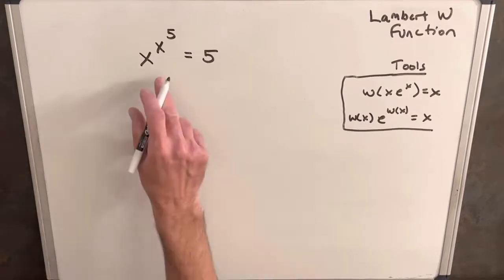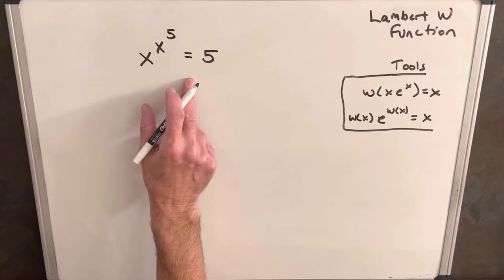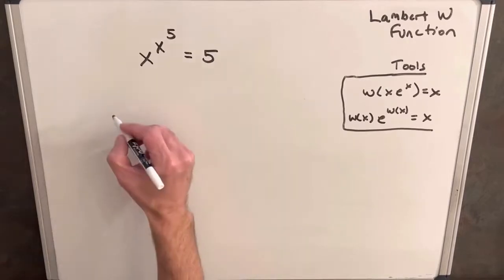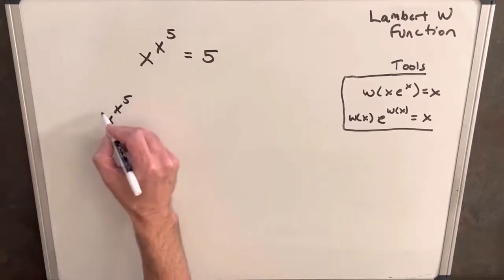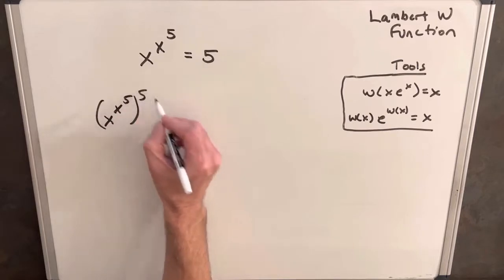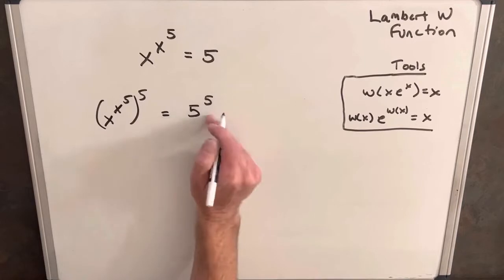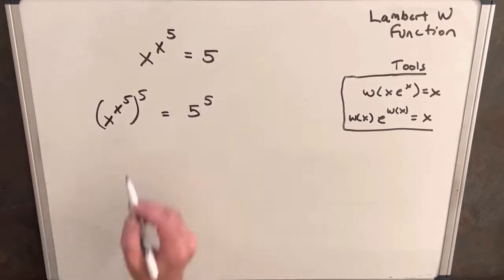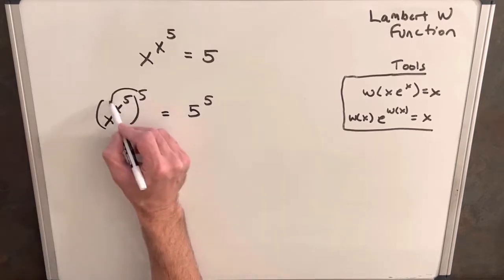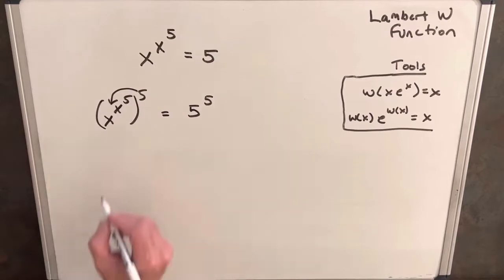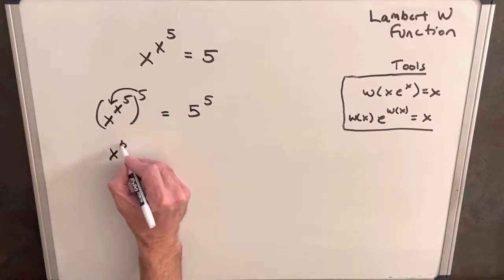So we take this expression and we're going to raise both sides to the fifth power, so we'll have on the left side x to the x to the fifth to the fifth, and five to the fifth. We'll just leave this this way and we can distribute this power inside the parentheses.